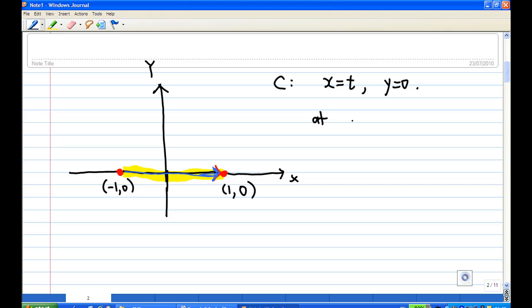At the point (-1,0), you can find that t is equal to -1. Because x equal to -1, y equal to zero. At the point (1,0), t is equal to 1. So you can check easily the value of t in different cases. When t equal to -1, you get (-1,0). When t equal to 1, you get (1,0).